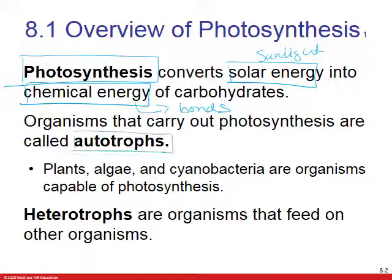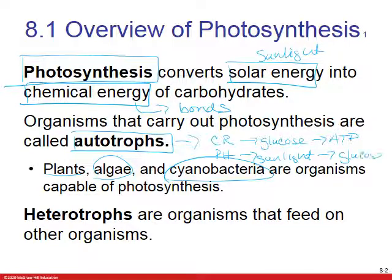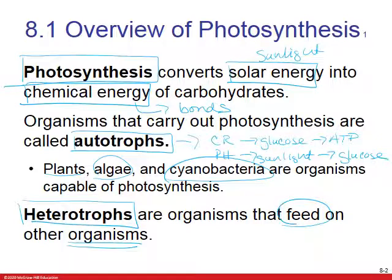Plants are autotrophs, and others include algae and cyanobacteria. Basically they make their own food, so they're capable of both cellular respiration — taking glucose and turning it into ATP — and photosynthesis, where they take sunlight and turn it into a carbohydrate or glucose. Plants, algae, and cyanobacteria are autotrophs; we are heterotrophs, so we feed on other organisms.